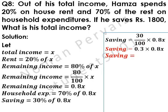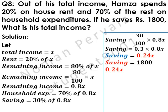Saving is equal to: 0.3 multiplied by 0.8 becomes 0.24, and x is written as it is. Now, looking at the question above, saving is equal to 1800. Saving is 0.24x.